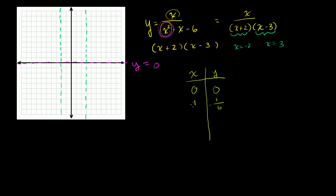When x is equal to negative 1, we have negative 1 over negative 1 squared, which is 1, minus negative 1 — so plus 1 — minus 6. That's negative 1 over 2 minus 6, which is negative 1 over negative 4, equal to 1 fourth. So we get a positive value. At negative 1 we're at 1 fourth, at 0 we're at 0, and at x equals 1 we're at negative 1 sixth.